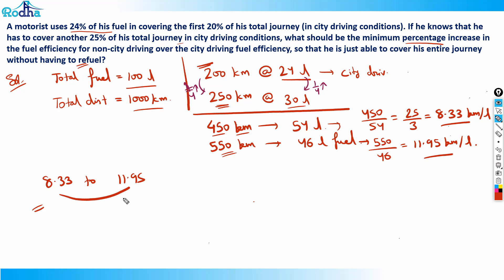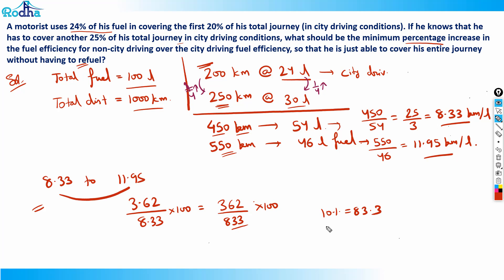The percentage increase in fuel efficiency: the increase is from 8.33 to 11.95, so the increase is 3.62. Percentage increase = 3.62 ÷ 8.33 × 100, which equals 362 ÷ 833 × 100. 10% of 833 is 83.3, so 40% is 333. The remaining 29 needs to be found as a percentage of 833: 1% is 8.3, so 29 is about 3.5%. Therefore total is approximately 43.5%.